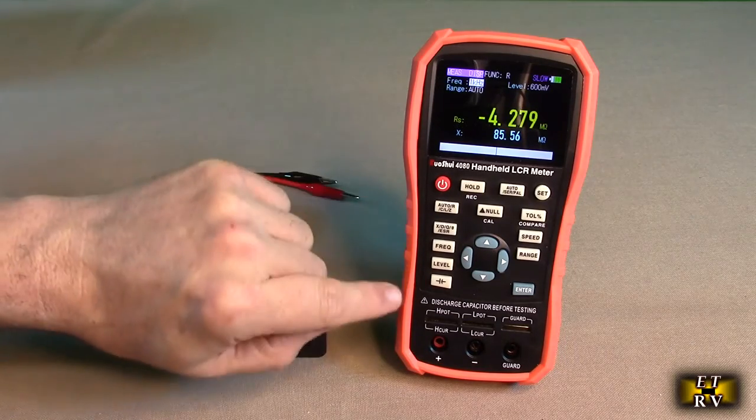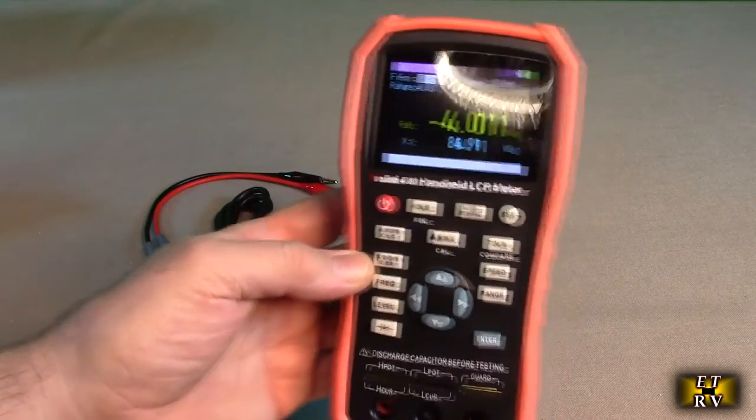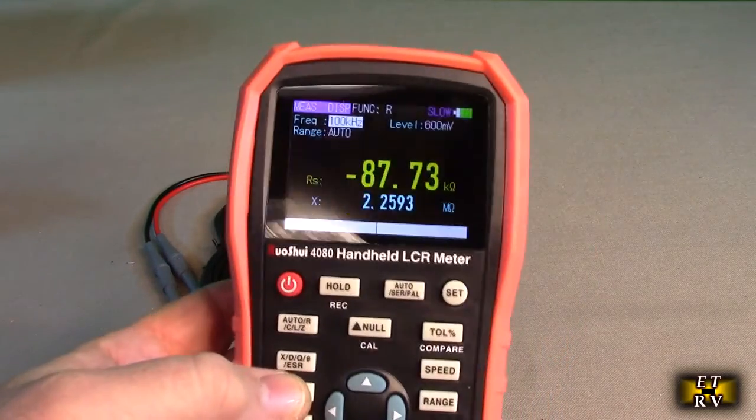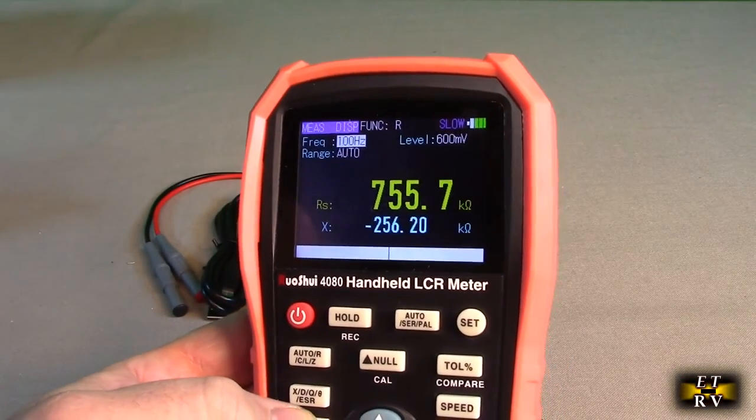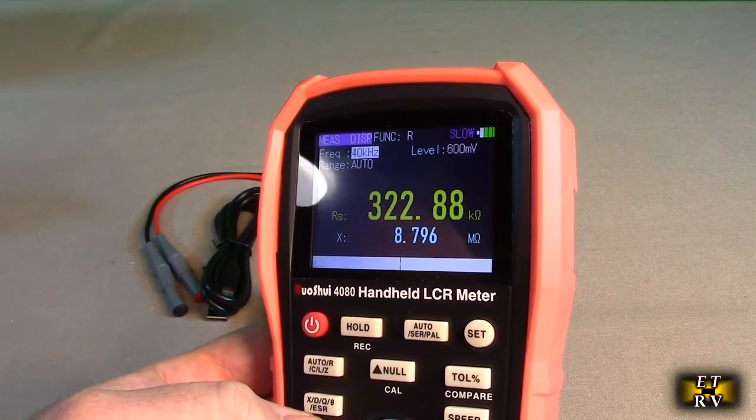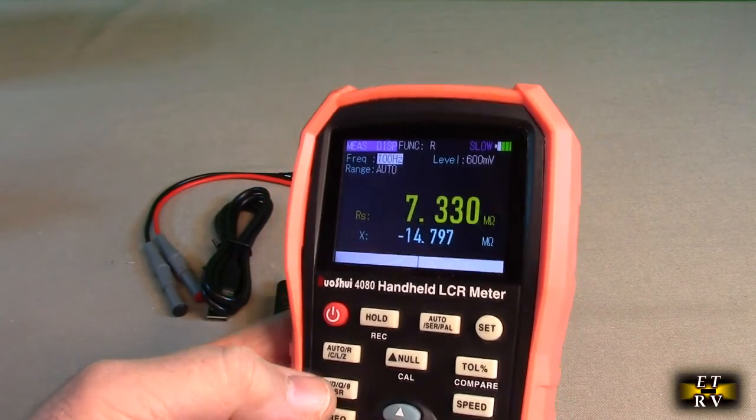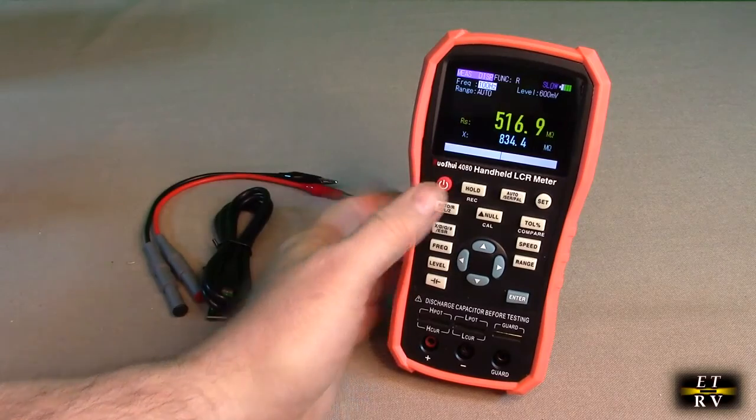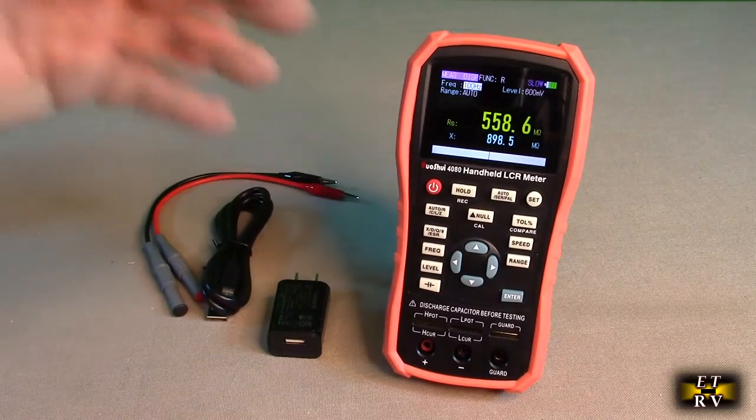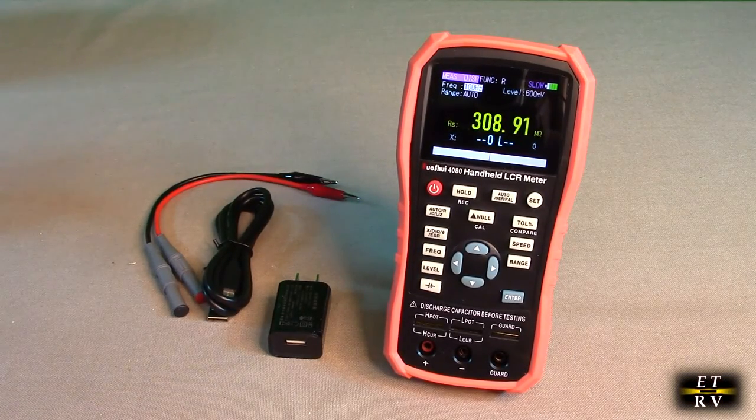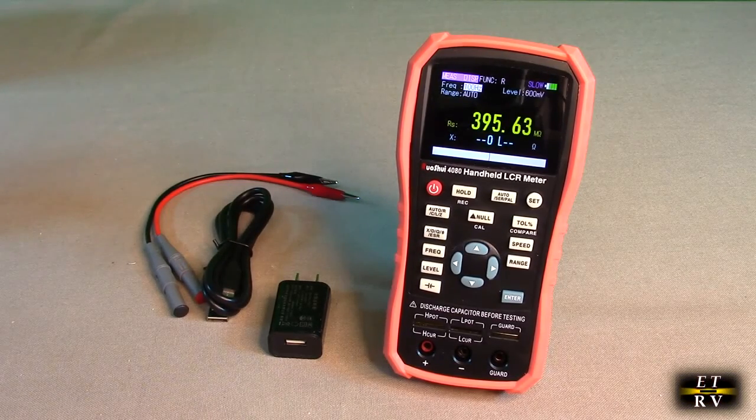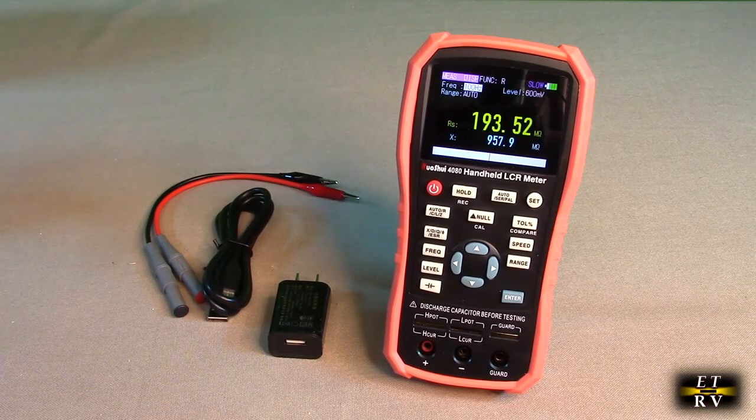The reason it could do this is because it actually generates a frequency. The frequency is right on this button right here. If you hit that frequency, you can see it's changing the rate right there up on top: 10 hundred kilohertz, 120 Hertz, 1 kilohertz, 10 kilohertz, 40 kilohertz, 100 kilohertz. What that means is the frequency that it is testing the capacitor is changing because the frequency is going to determine the effective resistance of that capacitor.